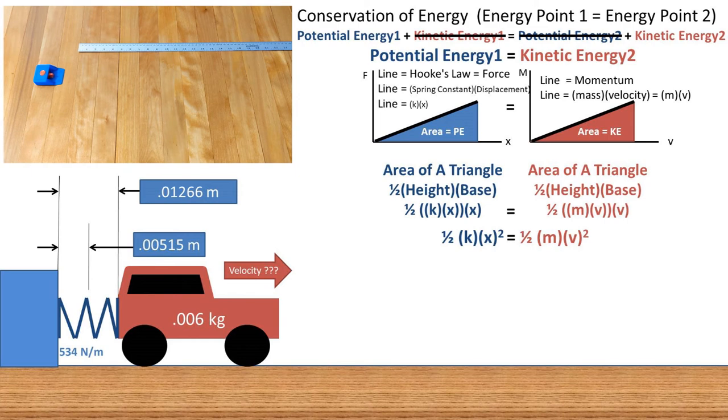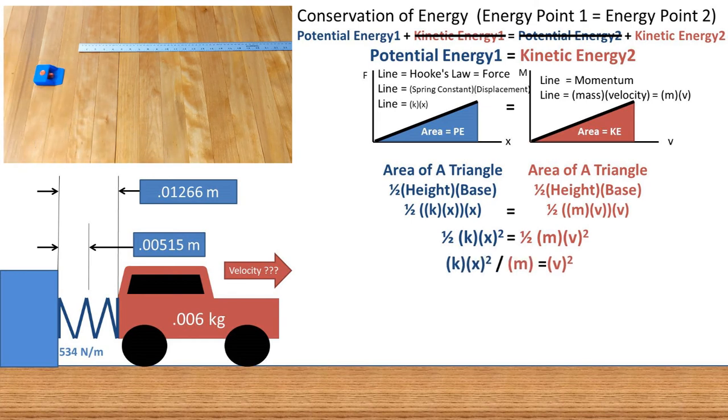Now we can set these two equations equal to one another. Our mission now is to get velocity to one side by itself. We can divide both sides by 1 half mass, which the 1 half gets canceled out.